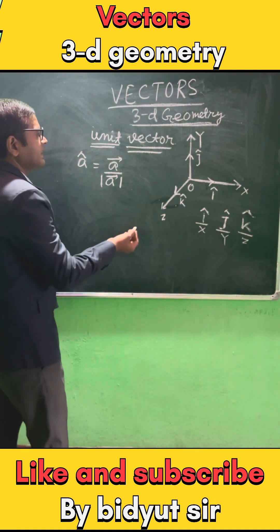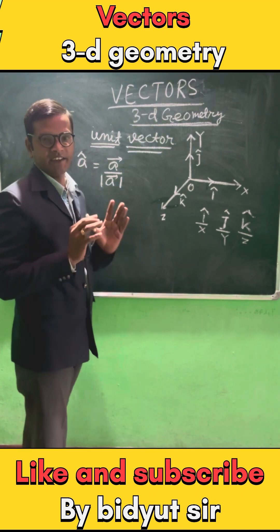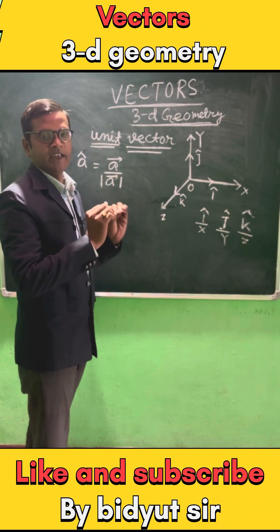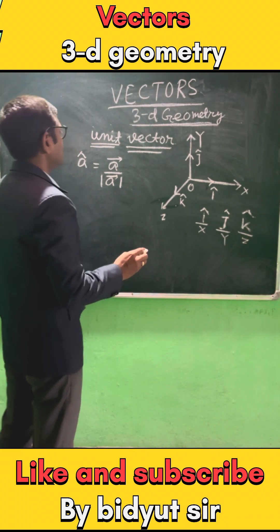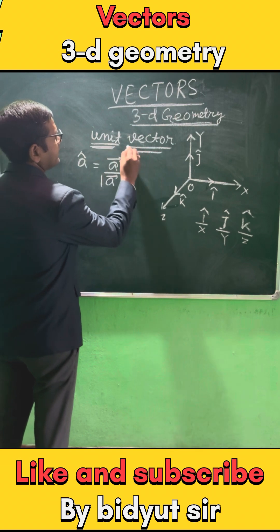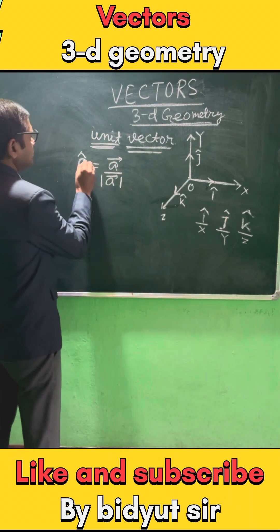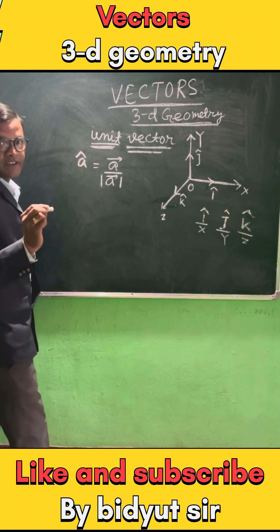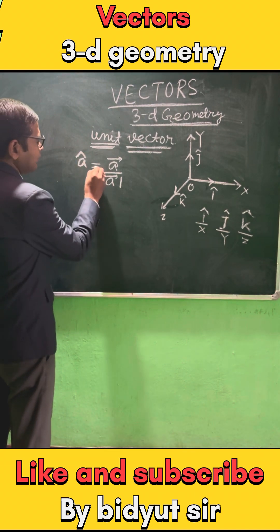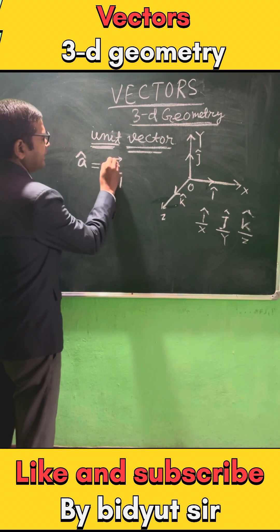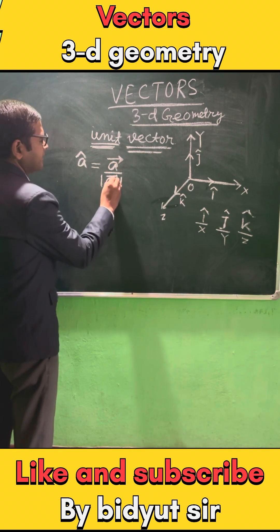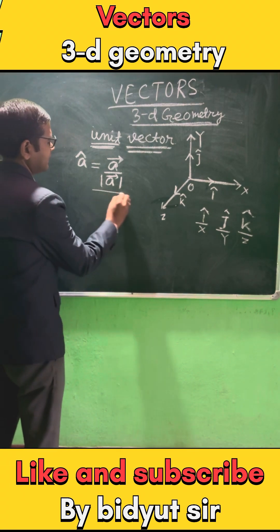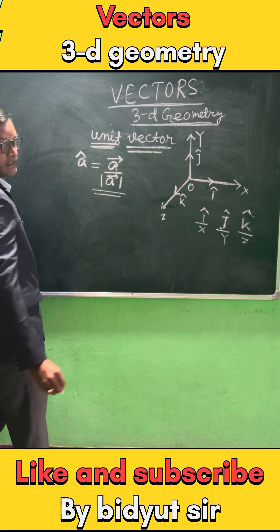What is the work of a unit vector? The unit vector's job is to indicate direction — which direction we need to go. That unit vector indicates that direction. So, what is the unit vector? Unit vector A-cap equals A-vector divided by the magnitude of A-vector. That is the unit vector formula: A-vector divided by its magnitude.